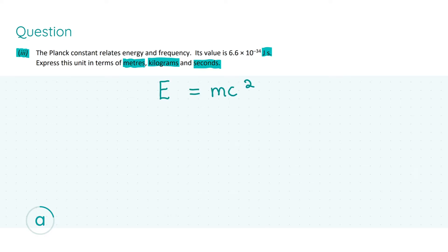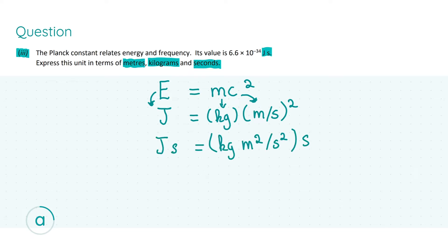Energy has the unit of joules, mass has units of kilograms, and the speed of light is in metres per second squared. We relate quantities to units, but we are looking for the joule-second, not just the joule. So we multiply the formula through by seconds — treating it like a normal algebraic equation — and after squaring the metres-per-second term and cancelling one power of seconds, the joule-second equals kilogram metres squared per second. This formula will get you seven marks.